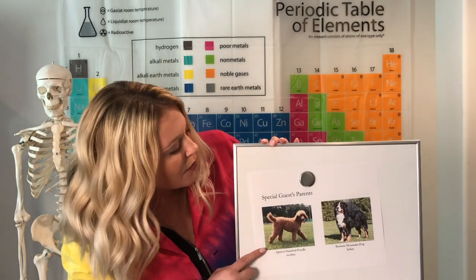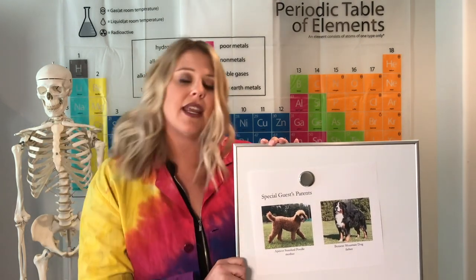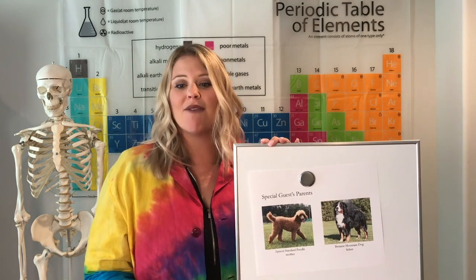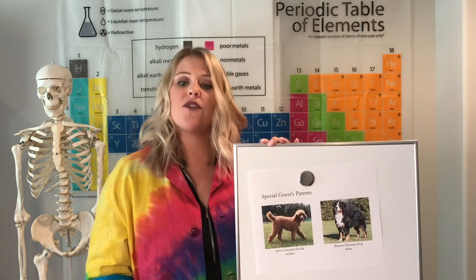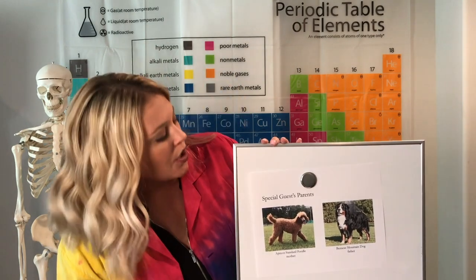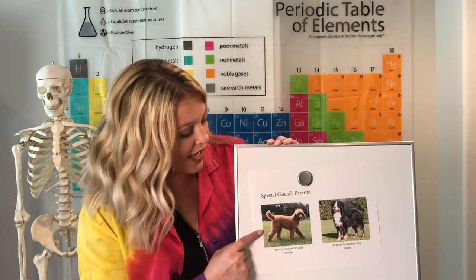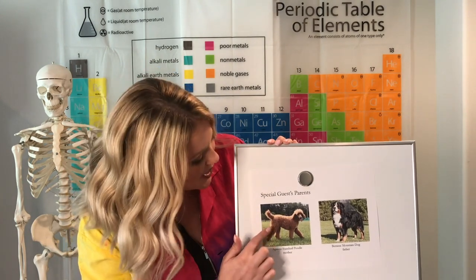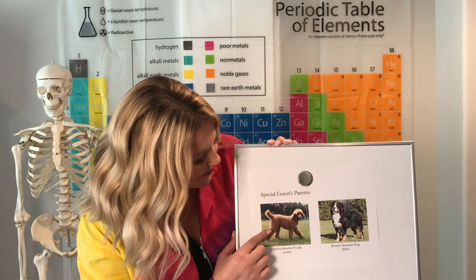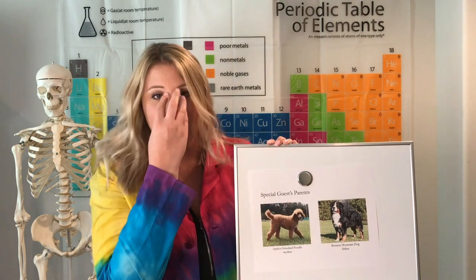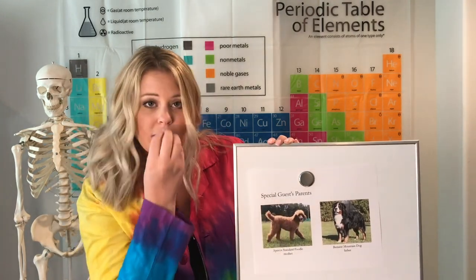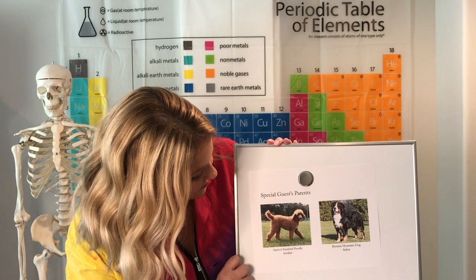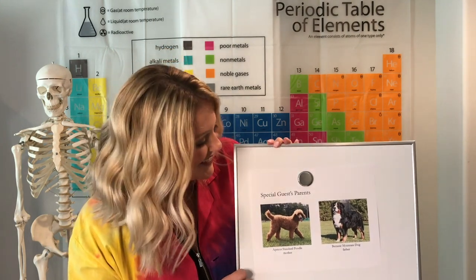The poodle is Bella's mother — an apricot standard poodle, the biggest size. She has brown, slightly reddish fur — really hair — and it's curly. Her nose is a little longer, coming out more. She has long ears, a long tail, and is very fluffy.